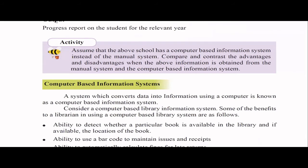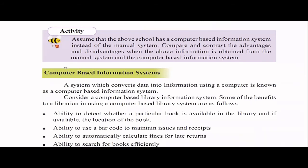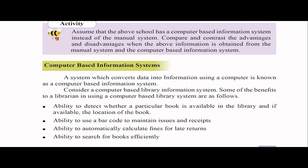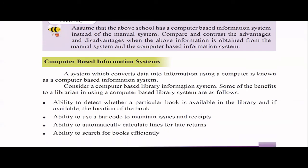In a computer-based information system, the system converts data into information using a computer — not manually. So that's why we call it a computer-based information system. Using the same library example: all books can be entered into the computer system by reading barcodes, and when a student comes they can easily search.